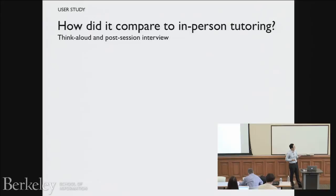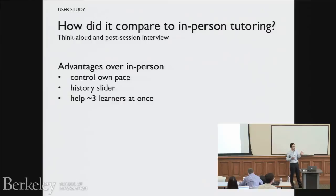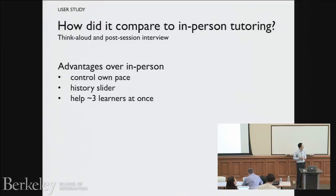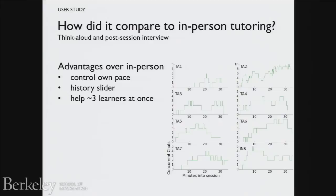How did it compare to in-person tutoring? Three main advantages the tutors cited: first, you can control your own pace — you're no longer being pulled in all directions in a physical lab. There's a feeling of an internal locus of control: 'I'm in control, I can help whoever I want at my own pace.' The history slider they used all the time and found super useful. And the answer to the number question is: they can help about two or three people at once.